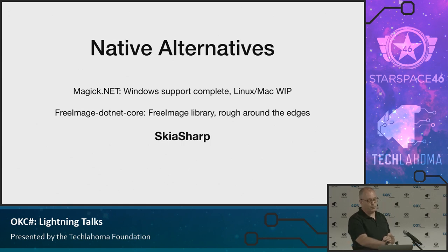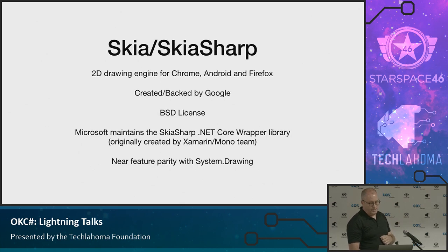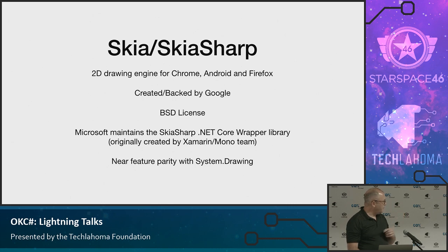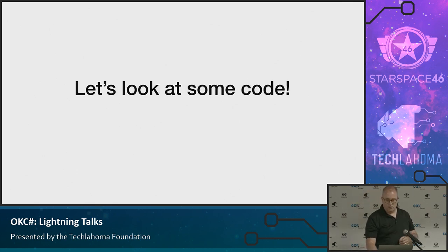For native alternatives — ImageMagick on Linux is great and they have a wrapper on Windows, though they're still working on Linux and Mac. FreeImage I've played around with a little bit — it's a little rough. SkiaSharp is actually the 2D drawing engine for Chrome, Android, and Firefox. It's backed by Google and has a great license. Microsoft has taken over the SkiaSharp wrapper, and I'm guessing — they haven't announced this formally — that it's going to be the graphics engine for .NET Core going forward. All the NuGet packages are maintained by them, and Mono owns the repos for the actual wrapper. It is very close to System.Drawing.